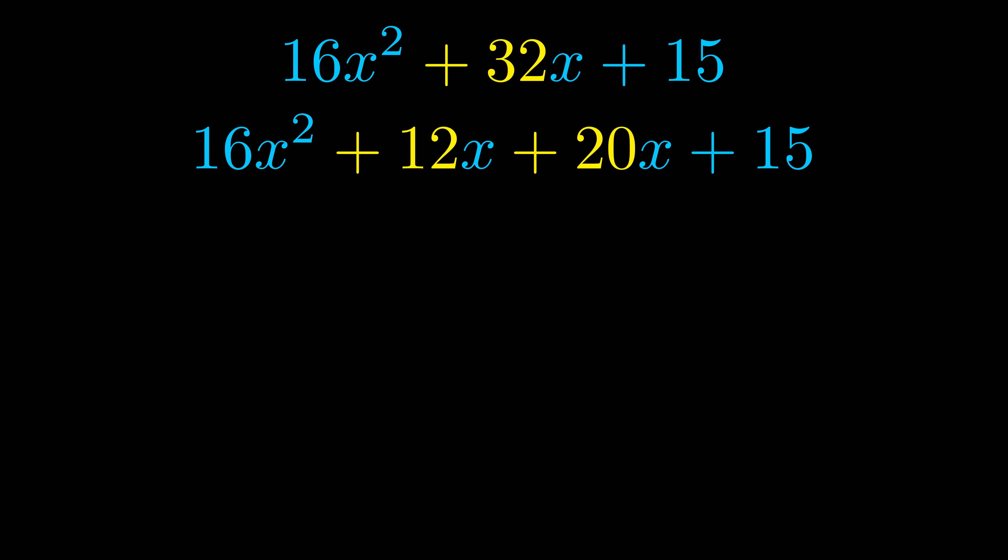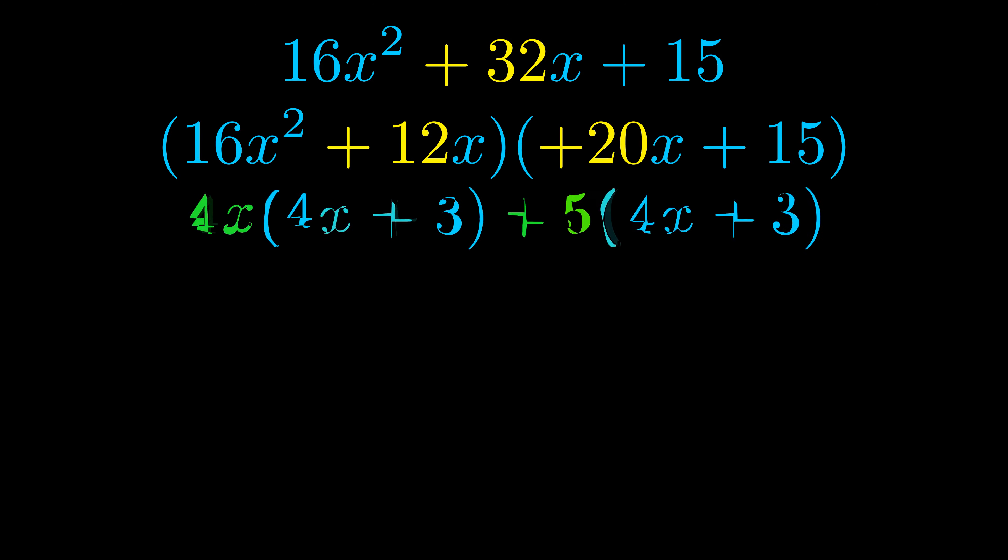Once we've done this we go ahead and put parentheses around the first term and the last term, and we do that so that we can take the greatest common factor out of both terms. We can see the greatest common factor is now outside in green.